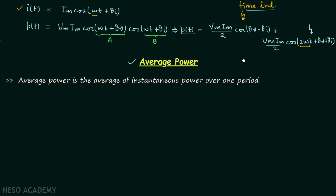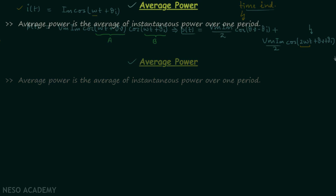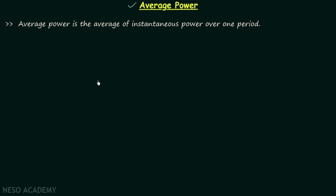On the other hand, if we talk about average power, then average power is time-independent. You will see this when we obtain the expression of average power. Now we will move on to the definition of average power and then find out its expression.